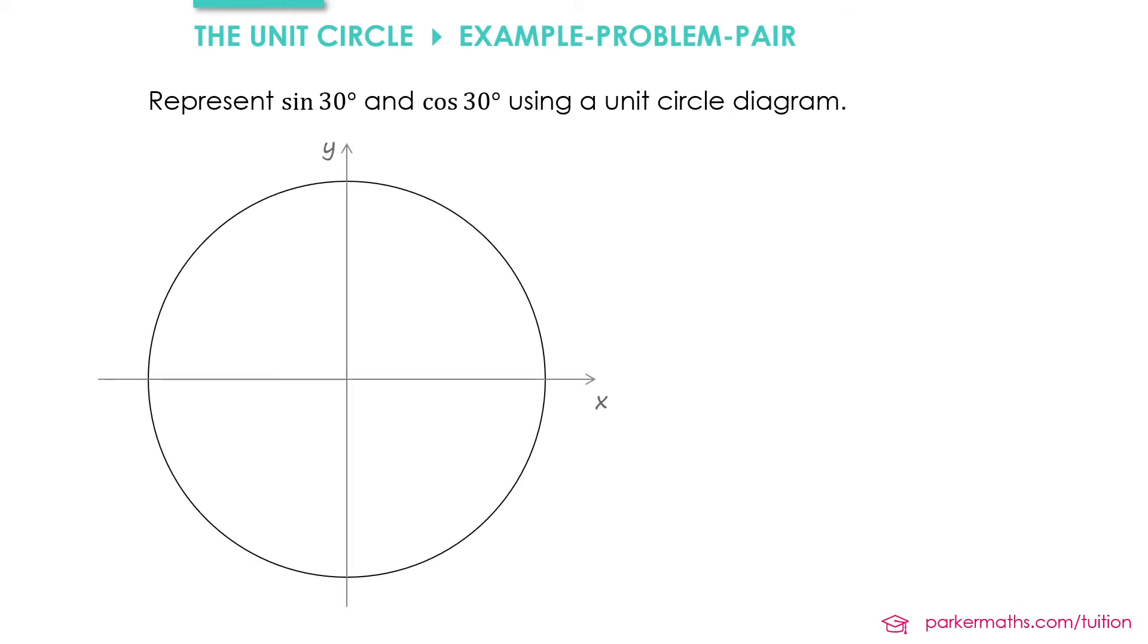Here is our unit circle and we'll draw a radius of length 1 at an angle of 30 degrees to the positive x direction. We're interested in a point on the circle, and to get to that point we go a distance in the x direction of cos 30° and a distance in the y direction of sin 30°.